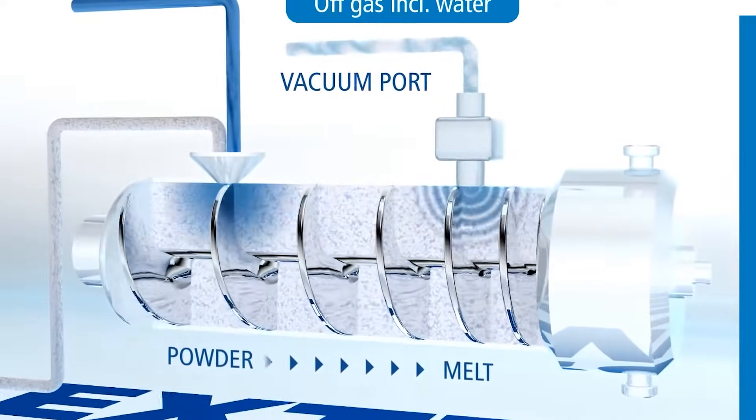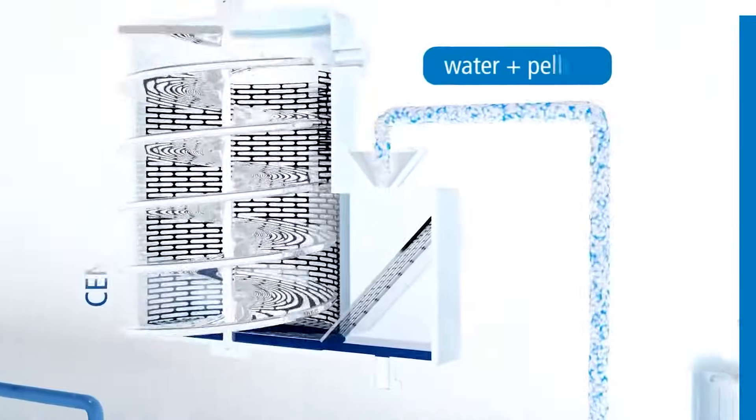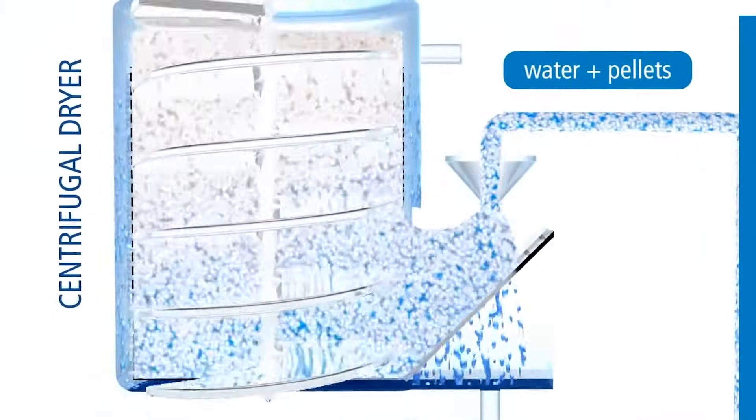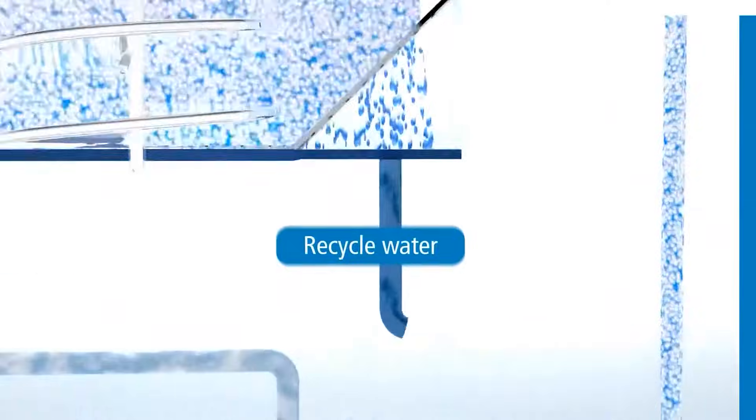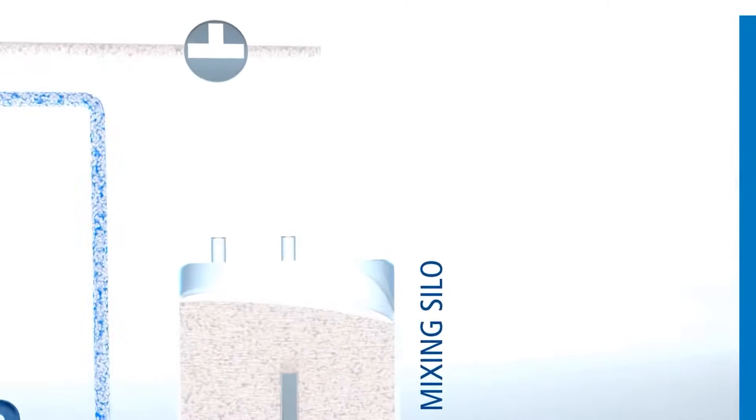After being packaged, the nurdles are then sent to plastic producers, who use them as raw materials for a variety of plastic production processes. Injection molding, extrusion molding, and blow molding are some of the techniques that are utilized in the process of shaping the plastic pellets into a variety of sizes and shapes after they've been received.